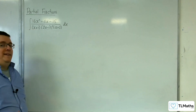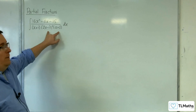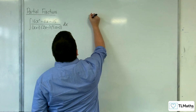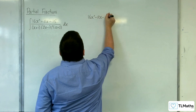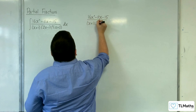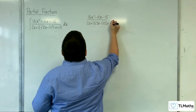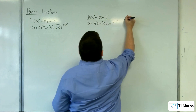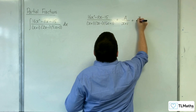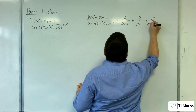Now, in order to do that, I need to know that I'm going to have to use partial fractions to split this up first. So 16x squared, take away 11x, take away 15, over x plus 1, 2x minus 1, 5x plus 3 is equivalent to A over x plus 1, plus B over 2x minus 1, plus C over 5x plus 3.